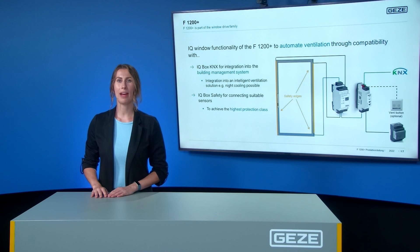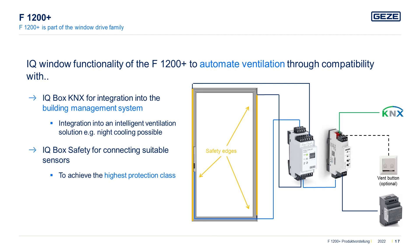Quiet automatic ventilation can be realized with the IQ window capability of the F1200 Plus. The drive is compatible with the IQ Box KNX, allowing the F1200 Plus to be integrated into the building management system. By integrating it into the building management system, intelligent ventilation solutions such as night cooling can be implemented.